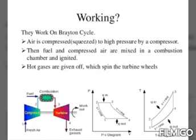Process 3 to 4 is the isentropic expansion process. The turbine develops work. Hot gases expand in the gas turbine isentropically up to atmospheric pressure. A part of this turbine work is used to run the compressor and the remaining work is supplied to the shaft.